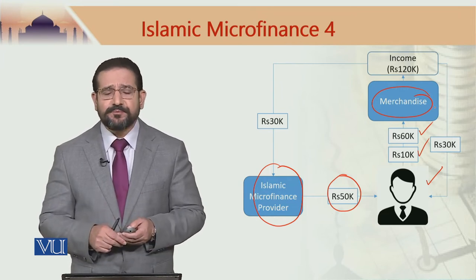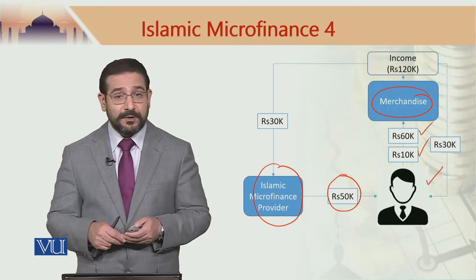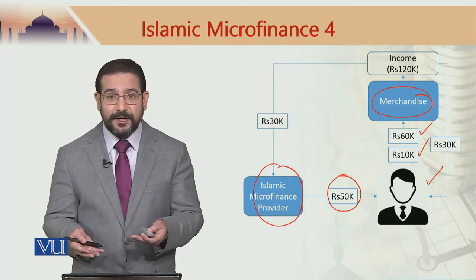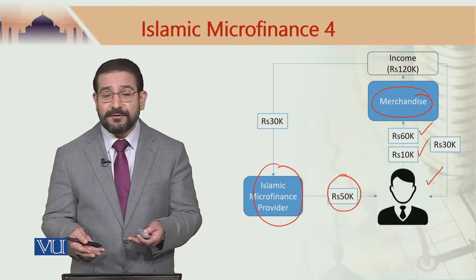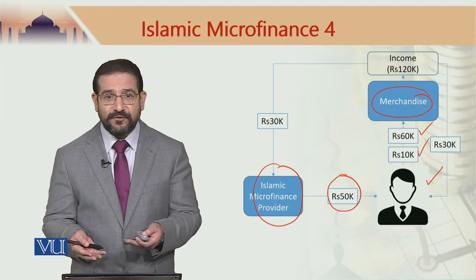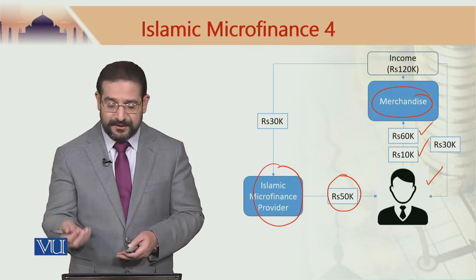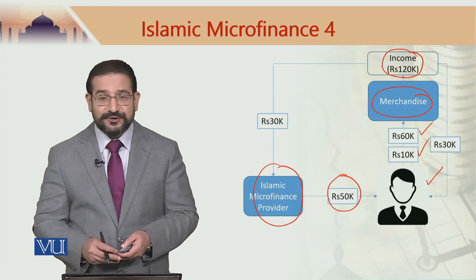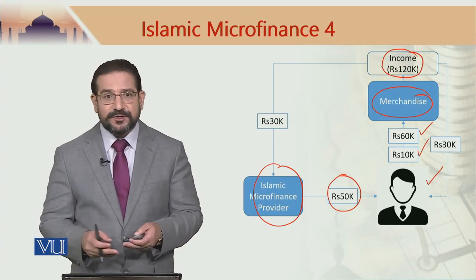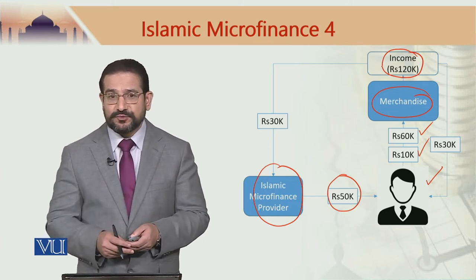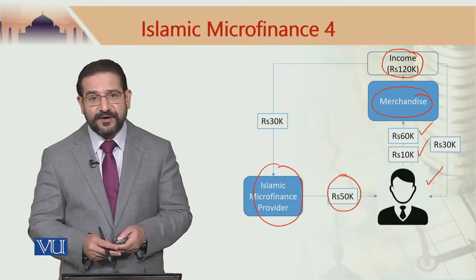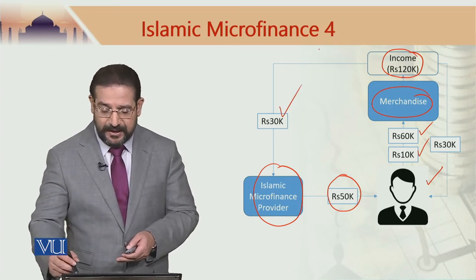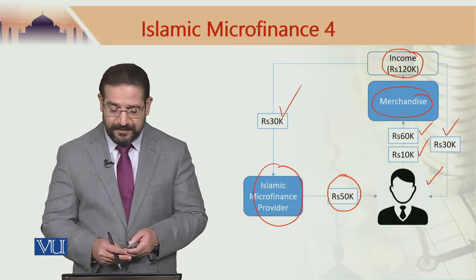There is a provision in Musharakah for one or more of the parties to remain silent partners, meaning they do not get themselves involved in running the business. Now, after one month, if the revenue generated by the business is 120,000 and costs are 60,000, leaving a profit of 60,000, and if the profit distribution ratio is 50-50, then 30,000 would go to the Islamic microfinance provider and 30,000 would be retained by the recipient.